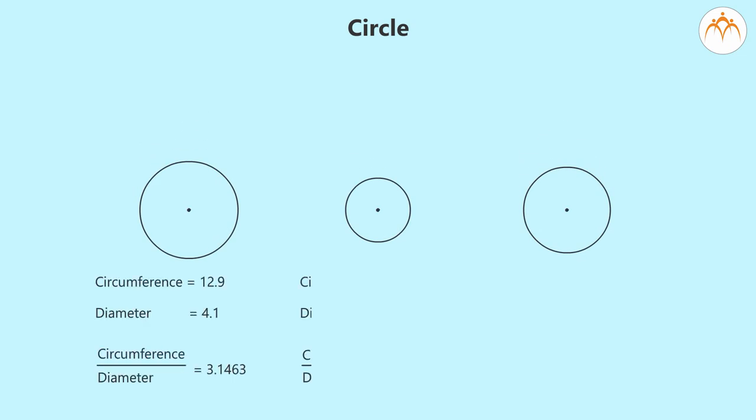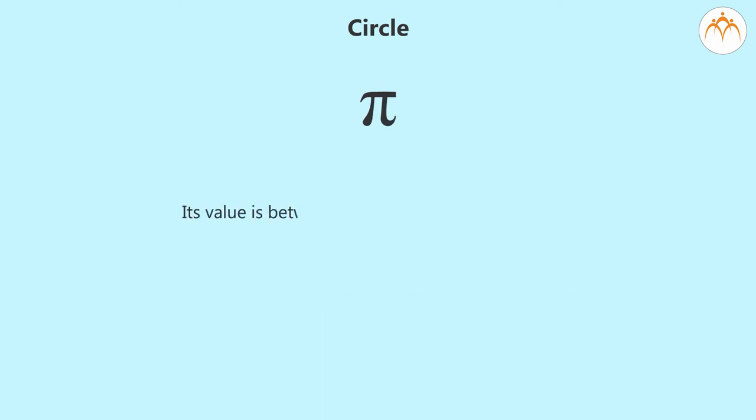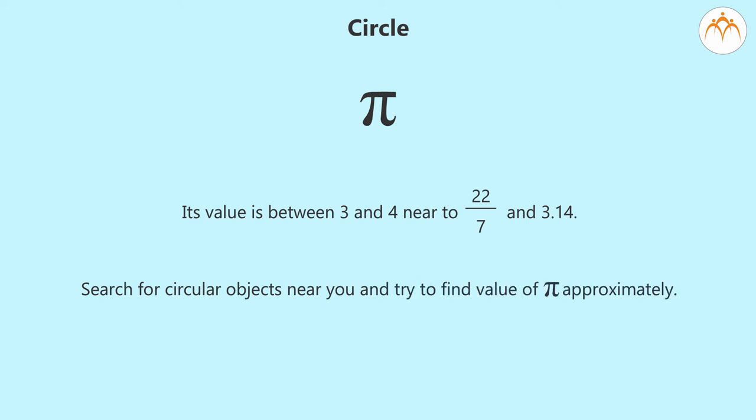If we measure circumference and diameter for different circles, we find that the ratio of circumference and diameter for any circle is a constant number. We represent this constant number by a Greek letter pi. Its value is between 3 and 4, near to 22 by 7 and 3.14. Search for circular objects near you and try to find the value of pi approximately.